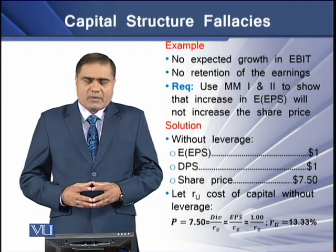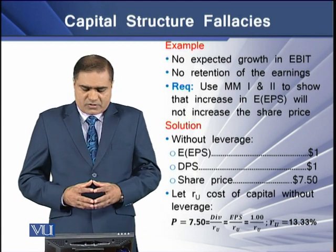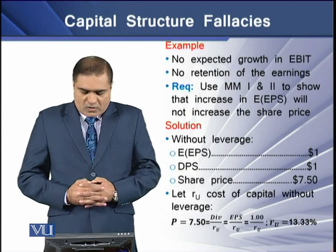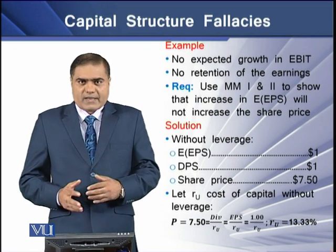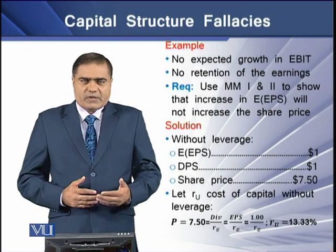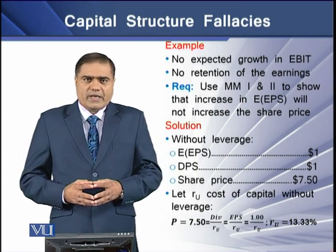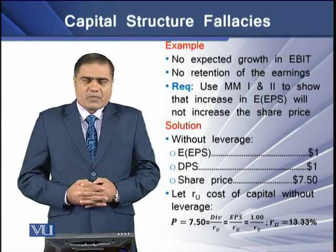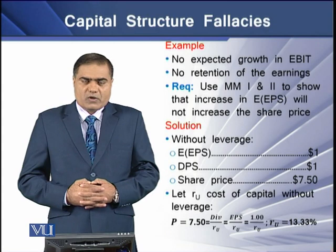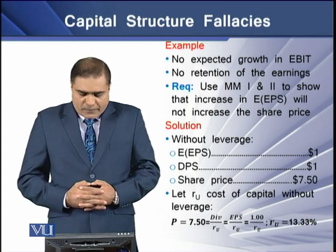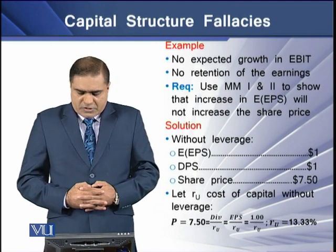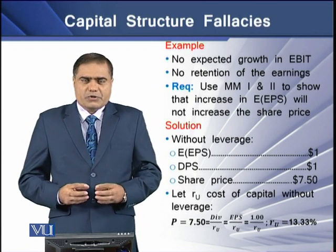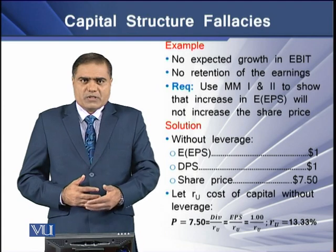The requirement is to use MM Propositions 1 and 2 to show that an increase in expected earnings per share will not increase the share price. Without leverage, the expected earnings per share is $1, and as a result dividend per share is also $1 because there are no retention plans. The share price is $7.5, and the unlevered cost of capital is 13.33%, computed using values from the model.